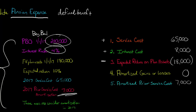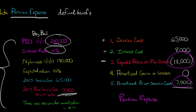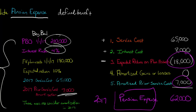Now we can calculate total pension expense. We have $65,000 plus $8,000 equals $73,000, minus the $18,000 expected return, plus $7,000 in prior service cost amortization. That gives us $62,000 in pension expense for 2017. In the next video, I'll talk about how to make the journal entries to reflect this.